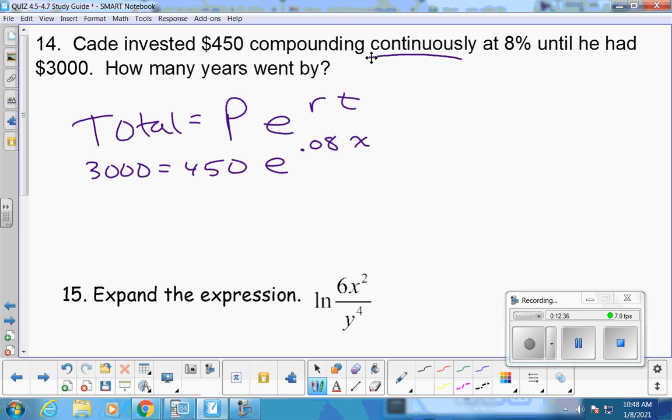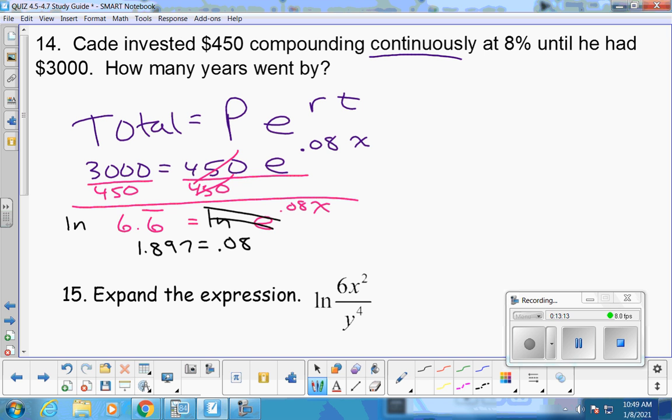What should I do first from both sides? Divide by 450. I should have called on Lydia. I know she would have known that. If I would have called on you, you for sure would have known that dividing is the first step. Because you always know the first step. So it's 6.6 repeating. Then we're going to ln both sides to cancel out that E. So ln of 6.6 is 1.897. And then just finish off by dividing by 0.08. 23.7 years.